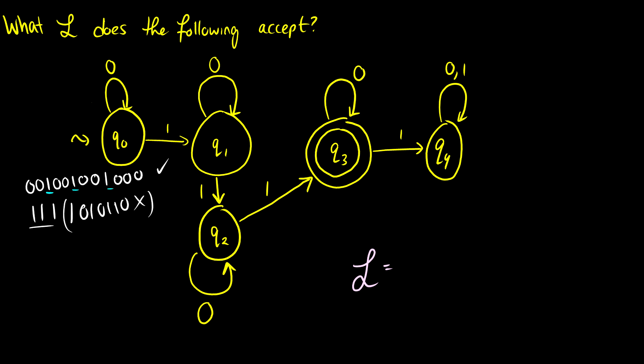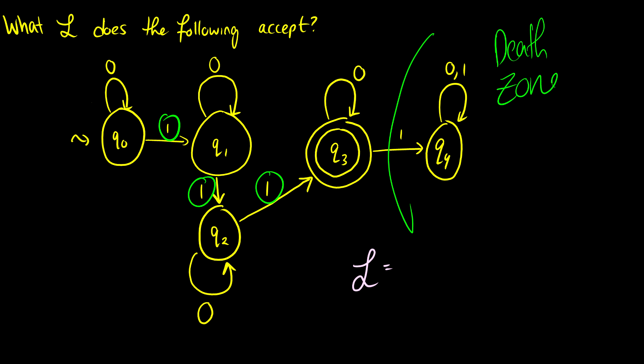So let's take a look analytically at what's going on here. First, we're trapped in q0 until we put in a 1, then we move up. We're trapped in q1 until we put another 1 in, we move up. When we put another 1 in, we move up. So every time we put a 1 in, we move up until we get to the dead state. So this is the dead zone, this is the death zone. If you're in Star Wars, this is the death star.